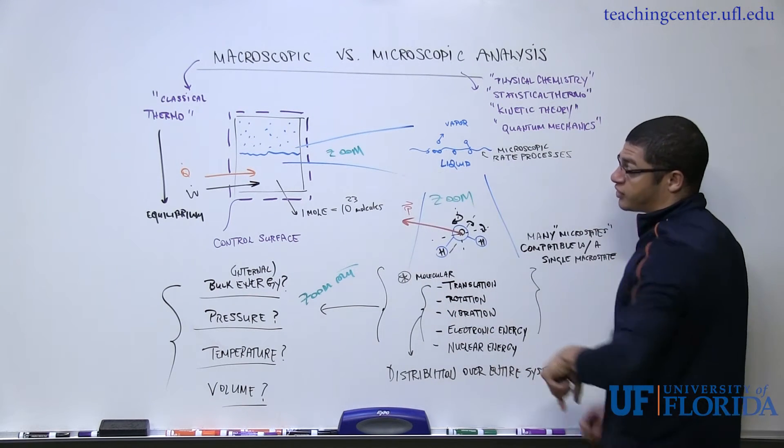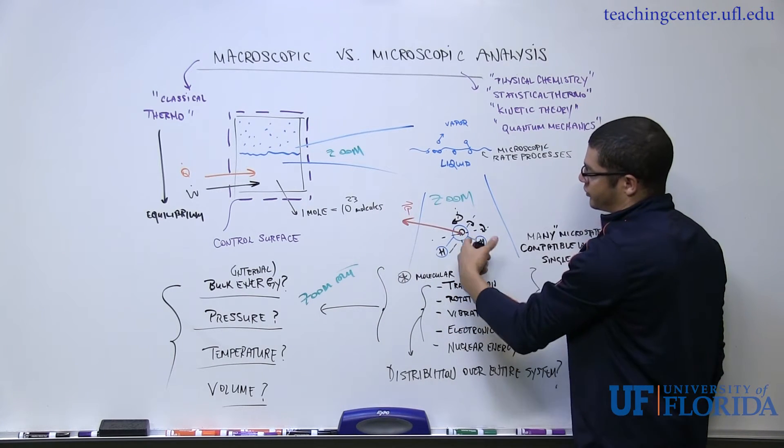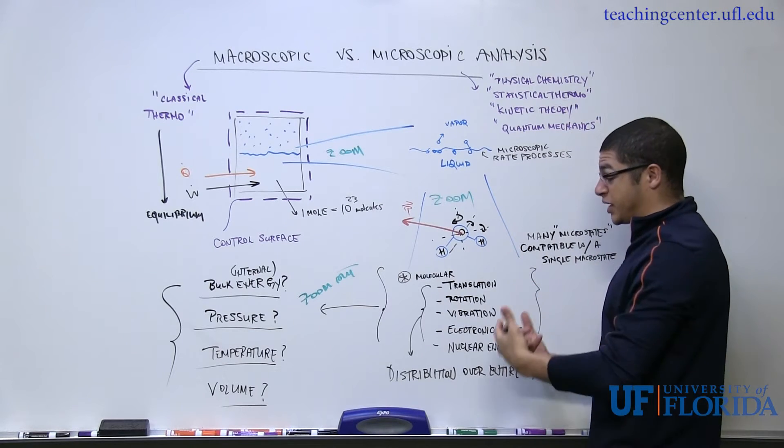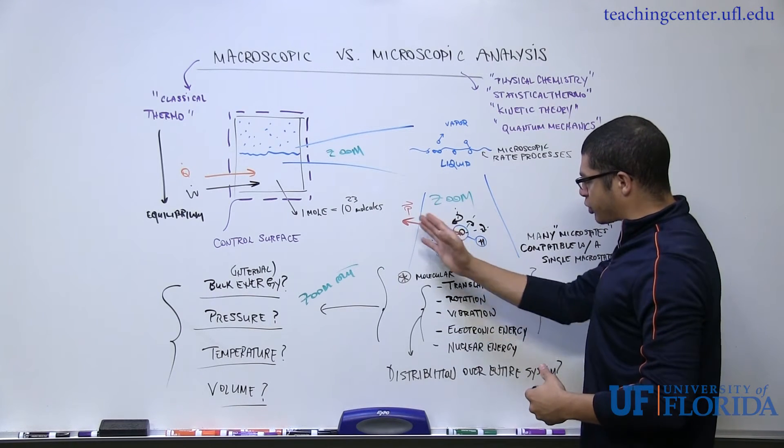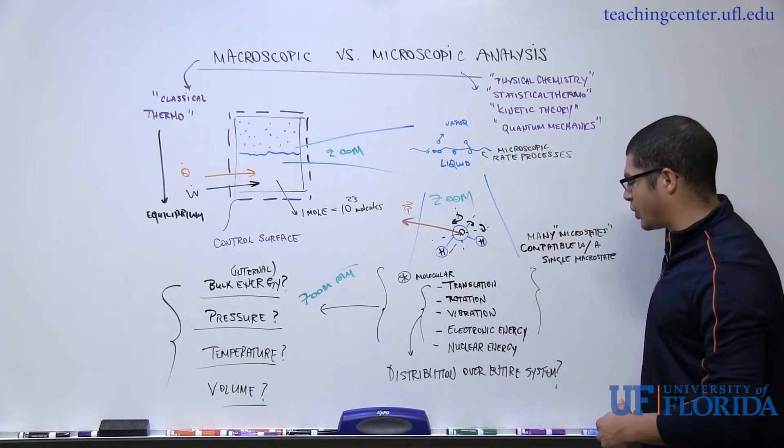Also, the molecule may be simply moving through space with a given vector. It possesses mass, and if it has speed or velocity, then the product of mass and velocity is its momentum or p vector. So there's translational energy as well.